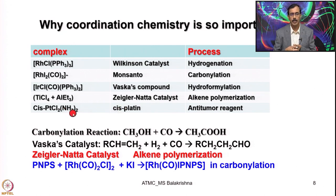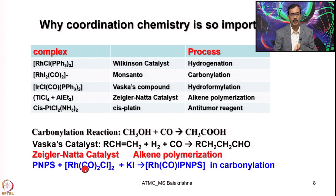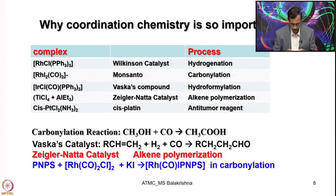The combination of titanium tetrachloride and triethyl aluminum was used by Ziegler-Natta in alkene polymerization. The utility of cisplatin in anti-tumor cancer treatment is well known. In my own research, I developed a phosphorus and sulfur donor compound which, when treated with rhodium chlorocarbonyl dimer, forms a chelate compound showing interesting catalytic activity comparable to that used by Monsanto for carbon monoxide.